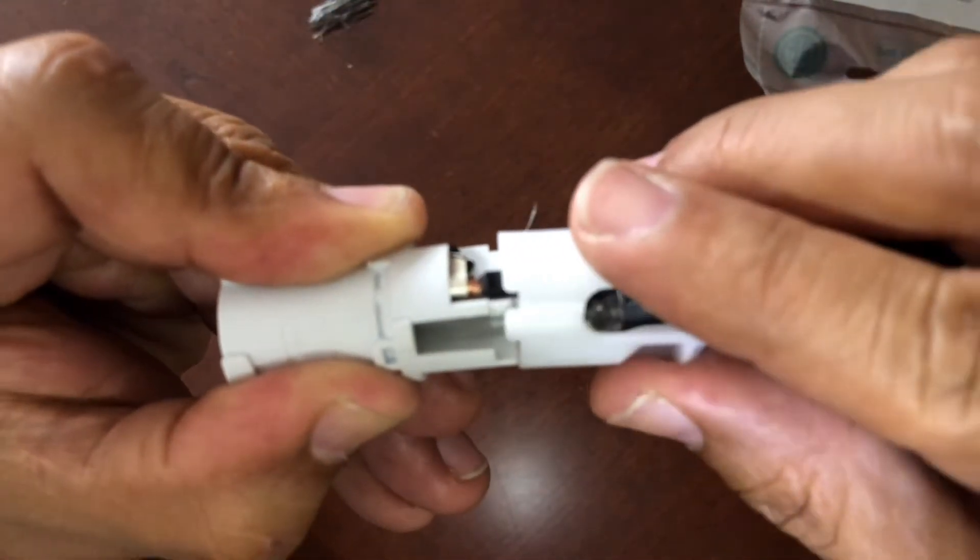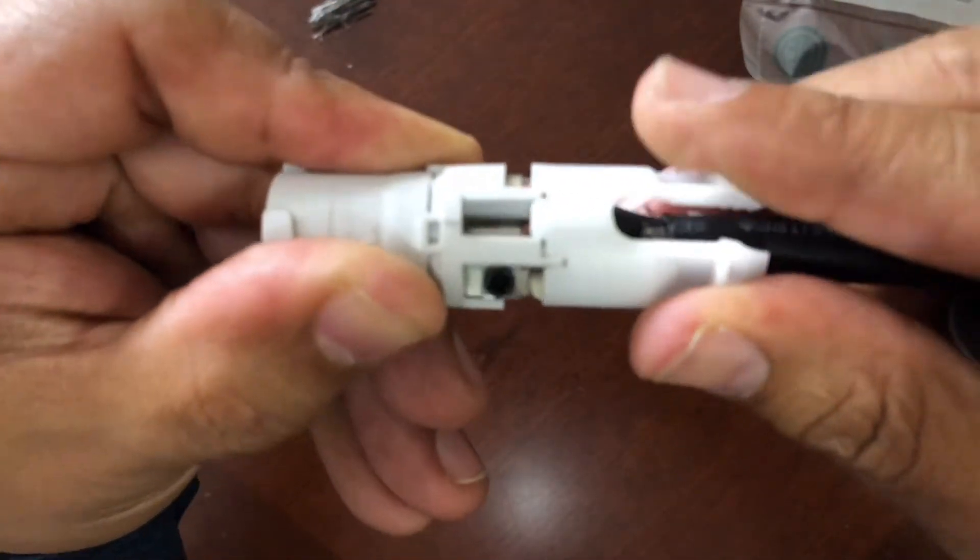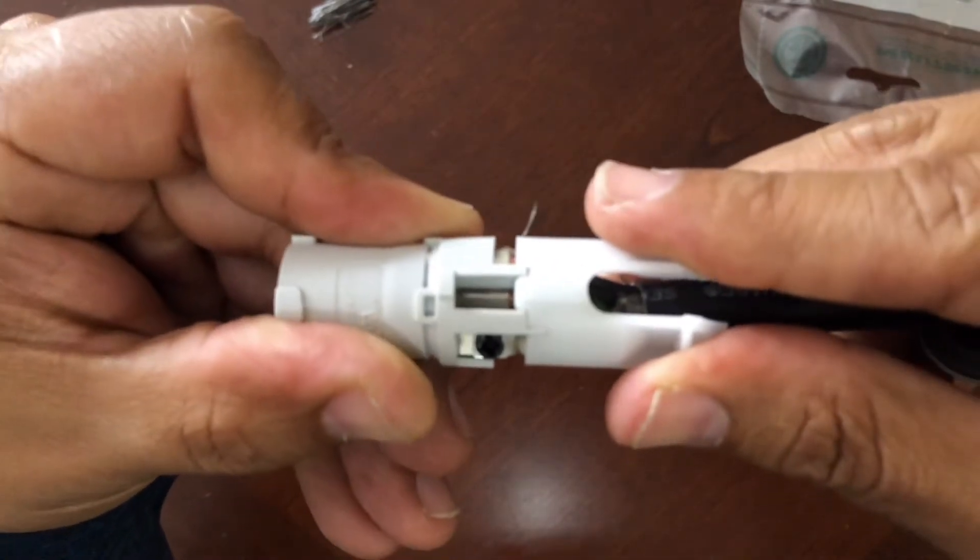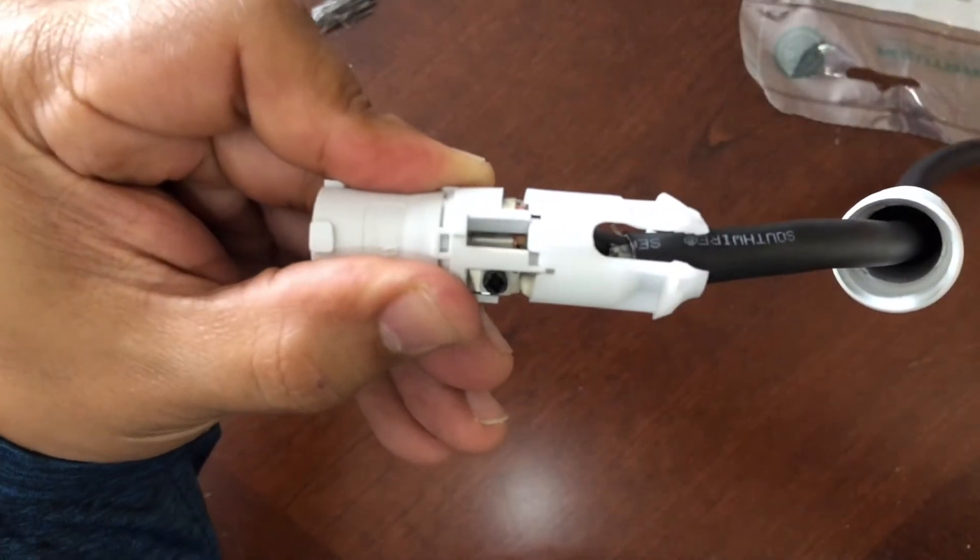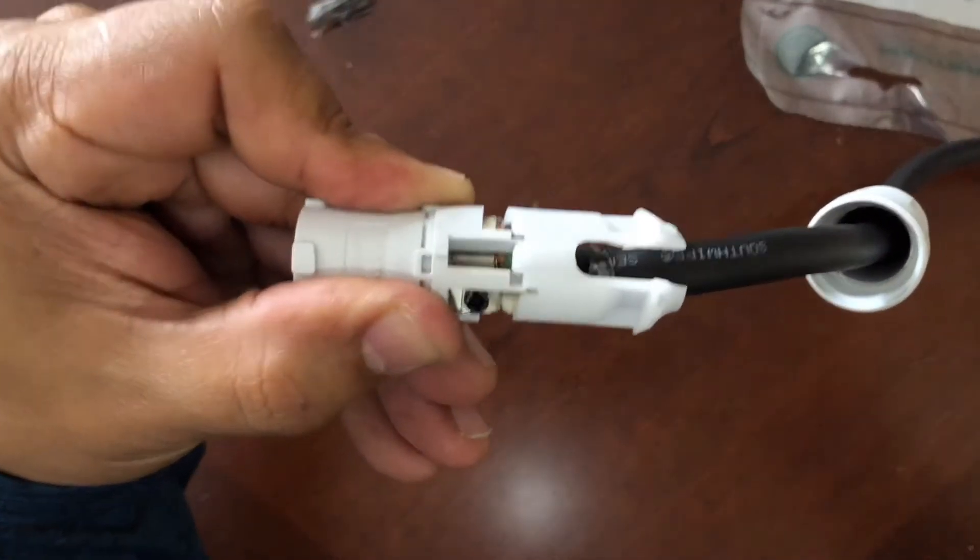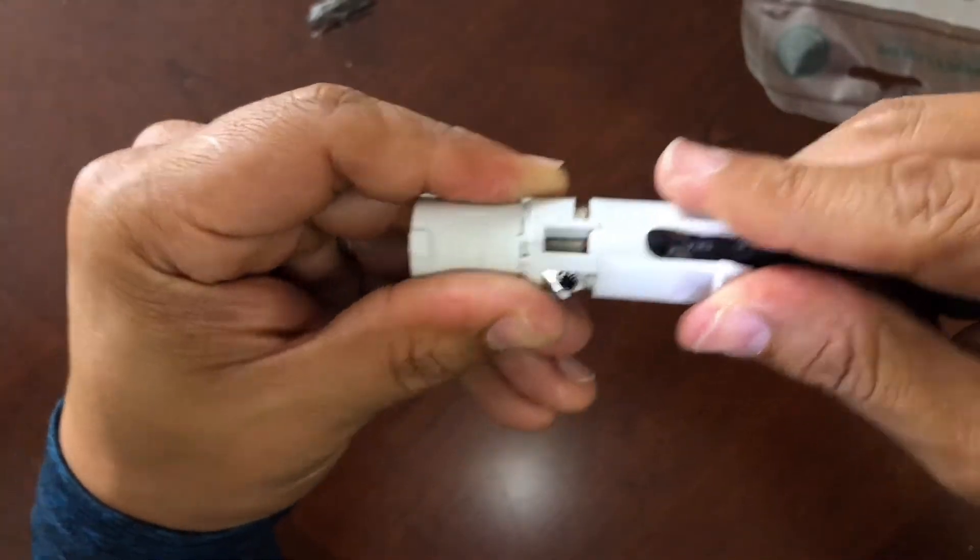The next step is to align the connector with the sleeve. Put them together—it has some tabs there, it's super easy to do. Just slide them and hold them together.